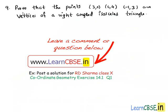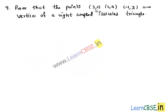Chapter number 14, exercise 14.2. Let's see the ninth question. Prove that the points 3,0 and 6,4 and minus 1,3 are the vertices of a right-angled isosceles triangle. Moving on to the solution.